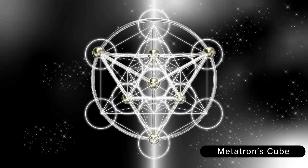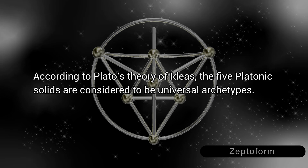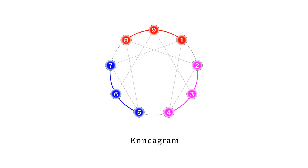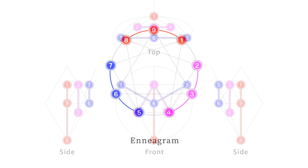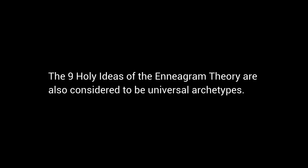The zeptoform can be seen as the essential component of Metatron's cube. According to Plato's theory of ideas, the five platonic solids are considered to be universal archetypes. The theory of ideas is also related to the nine holy ideas of the Enneagram theory. The nine points of the Enneagram correspond to the nine points of the zeptoform. These nine points represent the nine enlightened perspectives, and they are called holy ideas. The word 'idea' in holy ideas comes from Plato's theory of ideas — the nine holy ideas of the Enneagram theory are also considered to be universal archetypes.